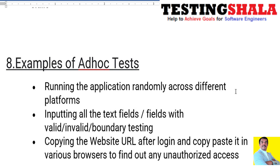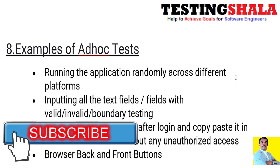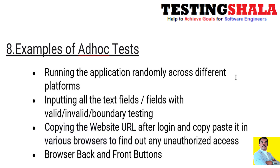A third example is, for web application testing, after logging into an application with user credentials, copying that URL and pasting it into different browsers or different systems to see whether you can log in with that logged-in URL — the goal is to find if any unauthorized access is possible. A fourth example is performing browser back and forward navigation operations while accessing a website, to see how the application behaves.